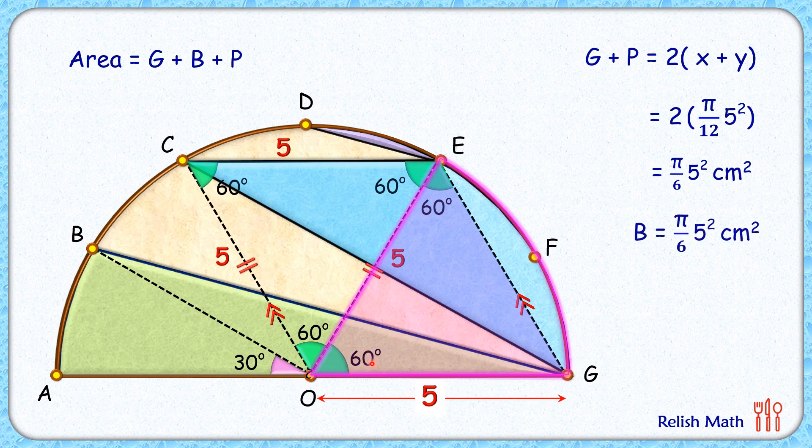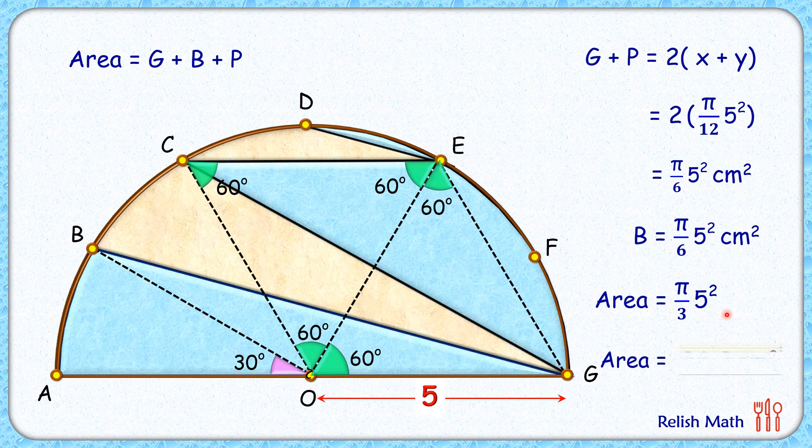Or π by 6 times 5 squared. Thus, the total area which we had to find is the sum of π by 6 times 5 squared and π by 6 times 5 squared, which is nothing but π by 3 times 5 squared. Simplifying, we get our blue shaded region as 26.2 centimeter squared, and that's our answer.